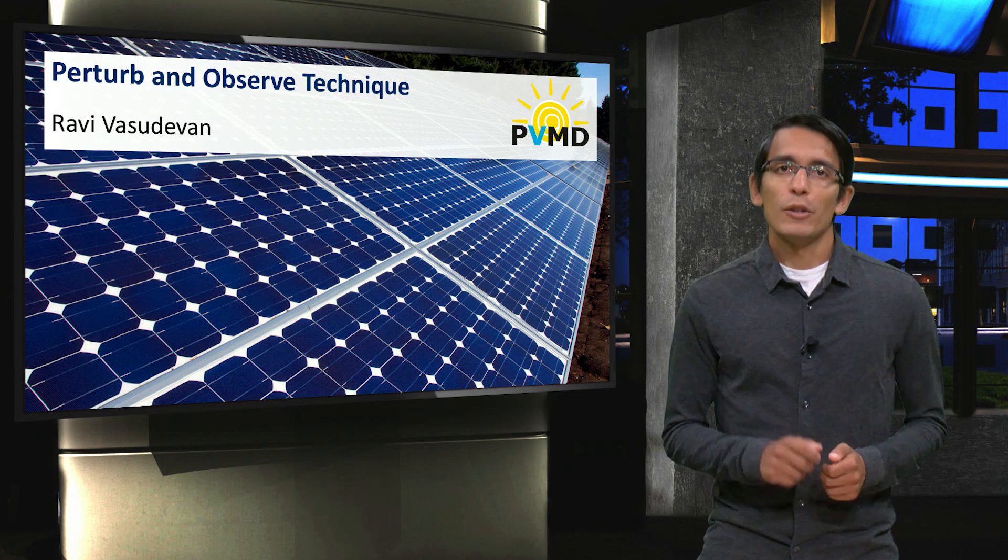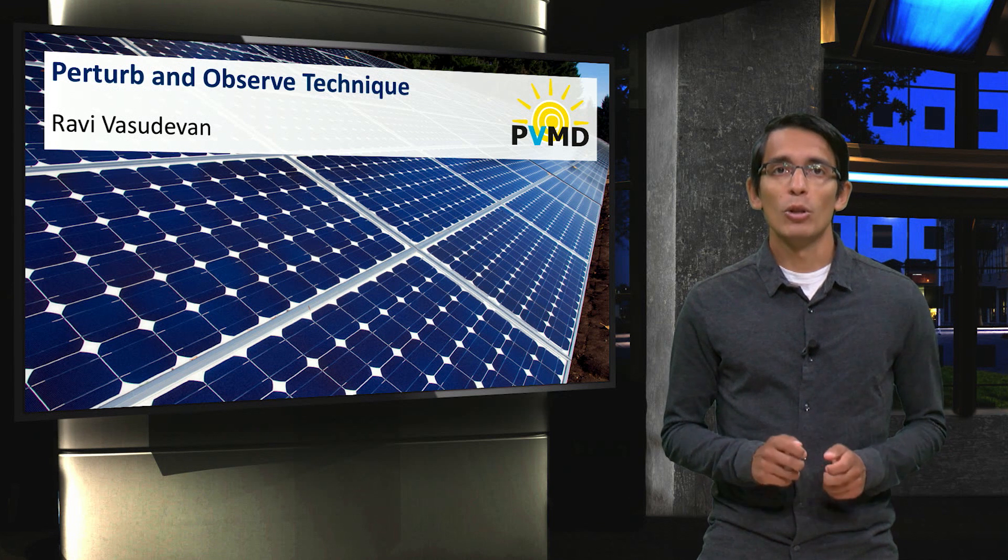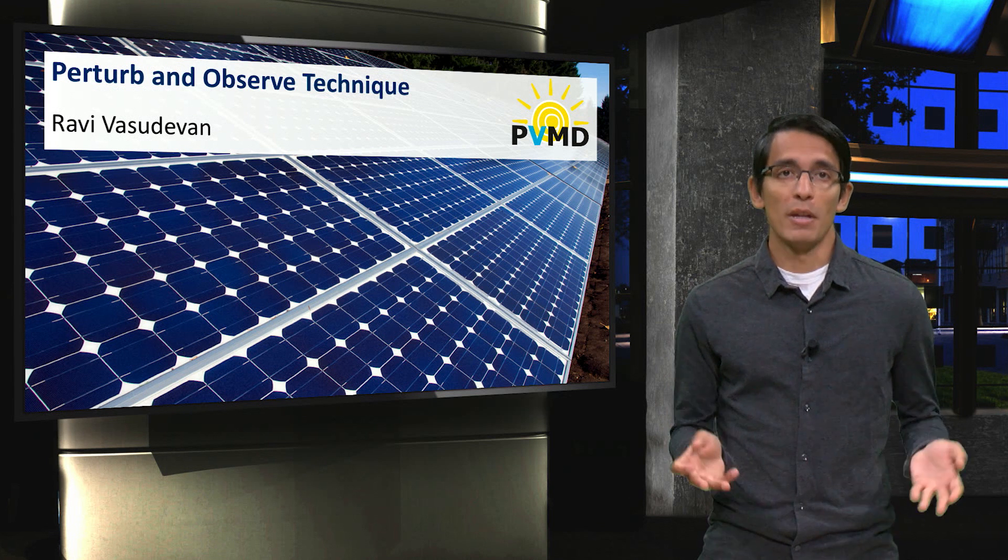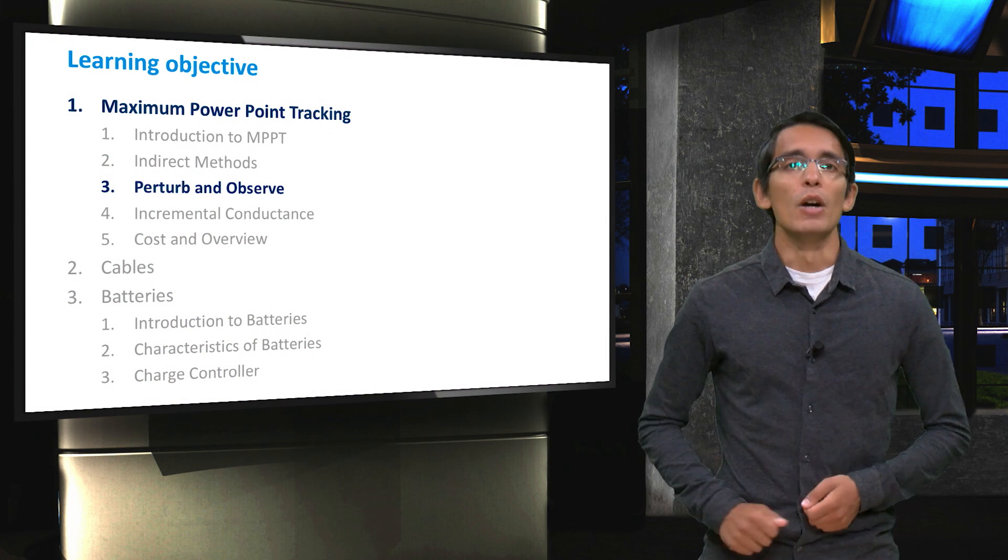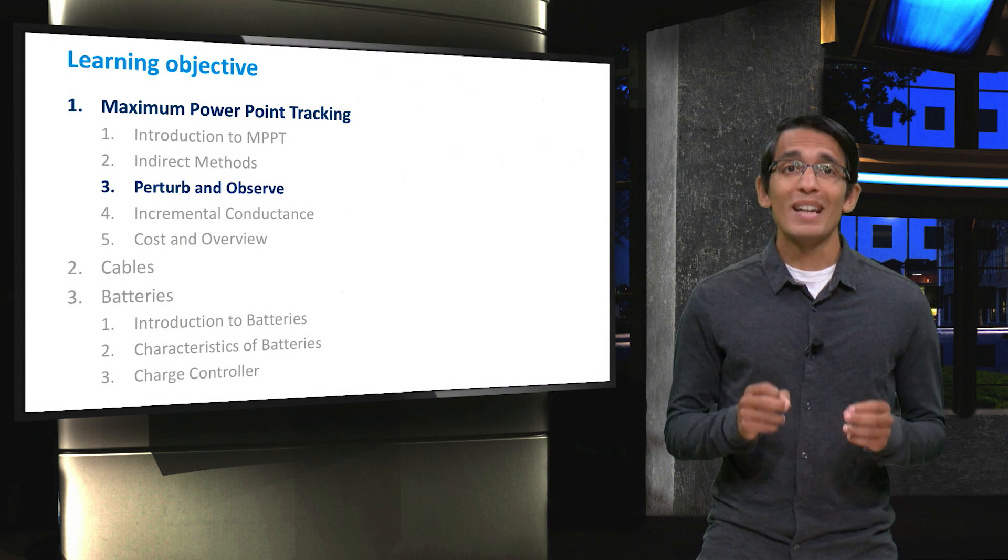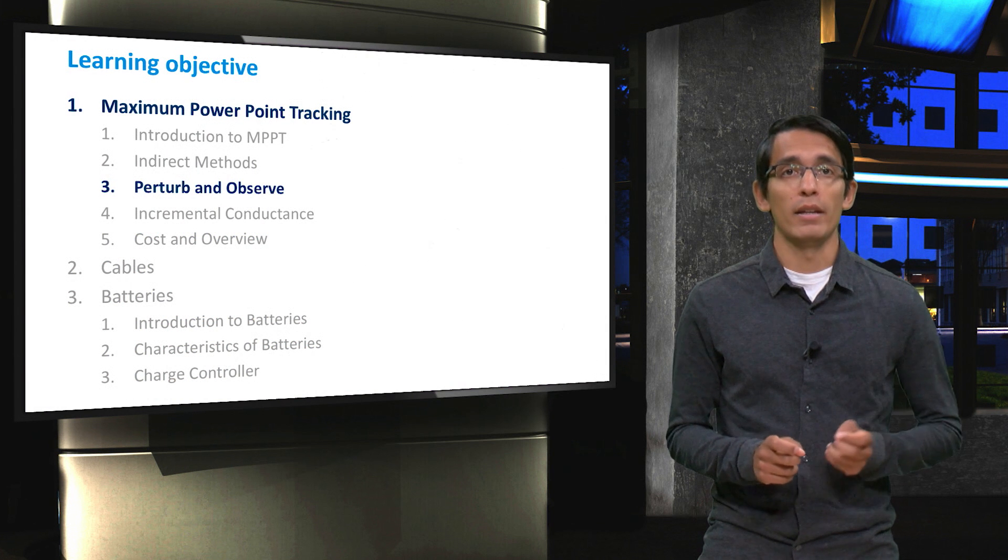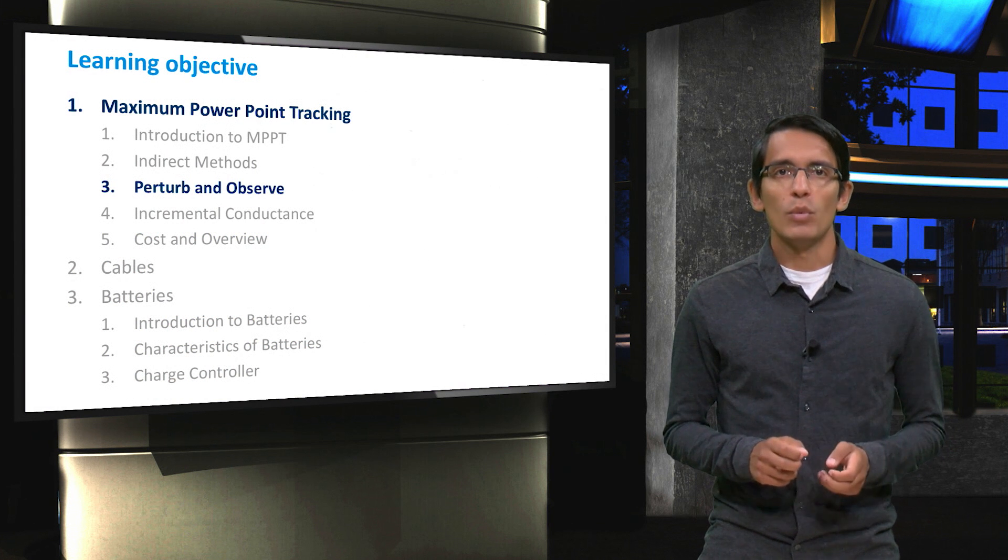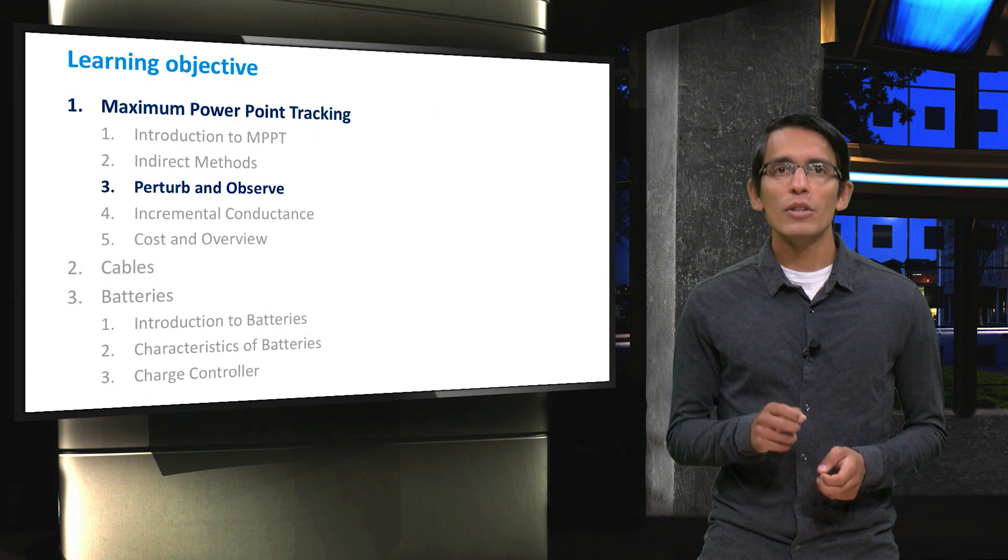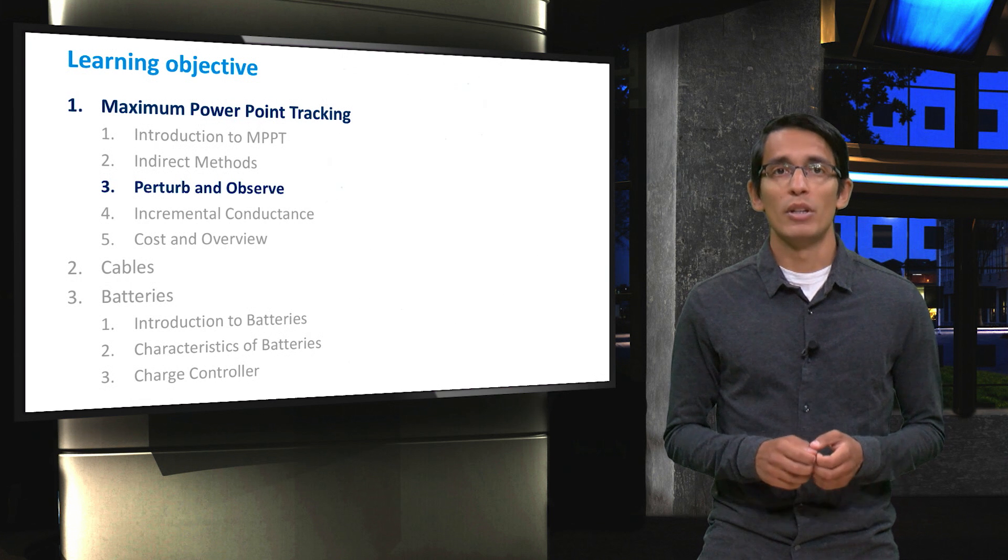So far, you've learned how to track the maximum power point of a solar panel indirectly through various methods. In this video, we will discuss the first direct technique for MPPT, which is the perturb and observe technique. You will learn how this technique works, and we will look into the drawbacks associated with the perturb and observe method.